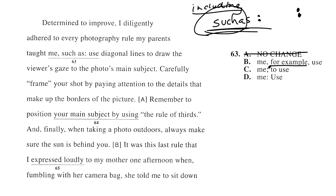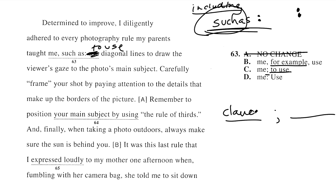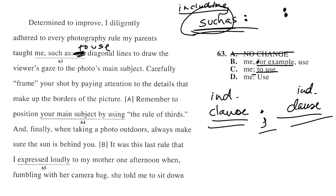C: 'taught me; to use diagonal lines to draw the viewer's gaze to the photo's main subject.' Here's the deal — if I say 'to use diagonal lines,' this becomes a fragment, and I can't put a fragment after a semicolon. A semicolon can only bridge what stands as a complete sentence and what stands as a complete sentence — an independent clause and an independent clause. There is no other way to use a semicolon except for one tiny exception. This doesn't cut it because what follows the semicolon is not a complete sentence.